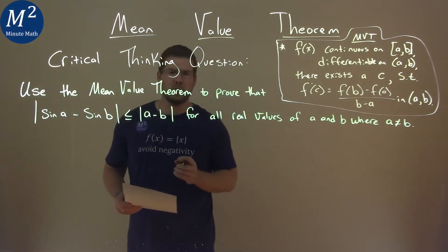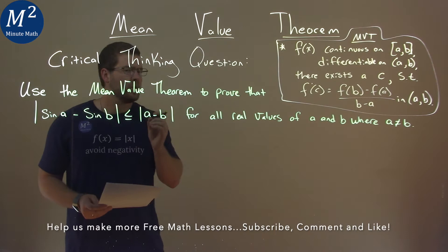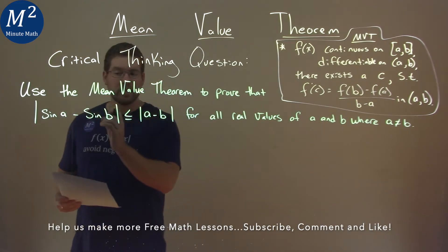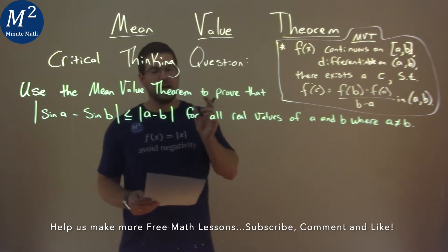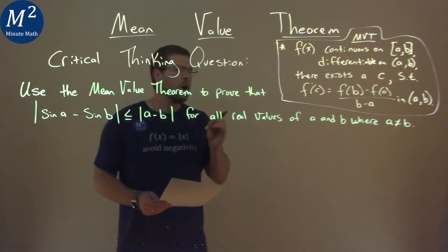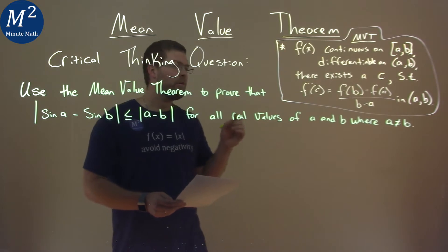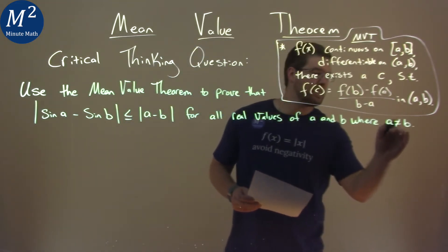We're given this critical thinking question: Use the Mean Value Theorem to prove that |sin A - sin B| ≤ |A - B| for all real values of A and B where A is not equal to B.